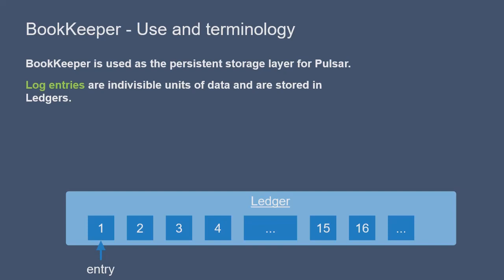As we've been talking about, Pulsar is a two-layer system and the storage layer is Bookkeeper. Now we're going to go over some Bookkeeper use and terminology. Like Pulsar, Bookkeeper was developed at Yahoo and it is designed to be a reliable, high-performance storage system.